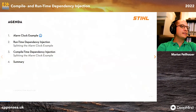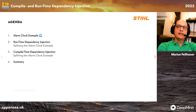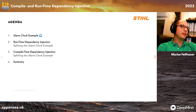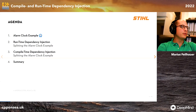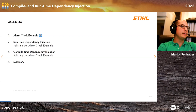A short agenda — four points we'll discuss today. First, I'll introduce a very simple alarm clock example which we use throughout the talk, starting with a naive implementation that is not testable. We will then evaluate using runtime dependency injection as a first approach, and then look at how to achieve the same thing at compile time using templates. In both cases we'll split the alarm clock example, and at the end we'll sum up what we've seen.